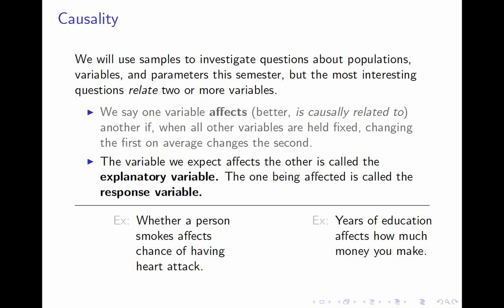Here are two examples. I'd like you to pause the lecture and identify: first, what the explanatory and response variables are, and second, whether each variable is categorical or numerical — since we have two examples, that's four variables total. Resume when you're ready.